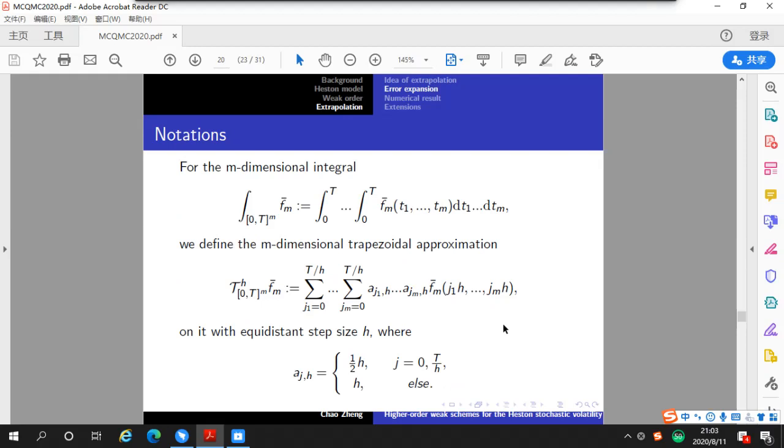Now, we are in the position to define the trapezoidal rule. For the m-dimensional integral, we can define the m-dimensional trapezoidal approximation as follows. So, with the coefficient equal to h/2 at the starting and end point and the coefficient is h somewhere else. So, this trapezoidal rule is the extension of one-dimensional trapezoidal rule to the multi-dimensional case through the Cartesian product, which is classical.